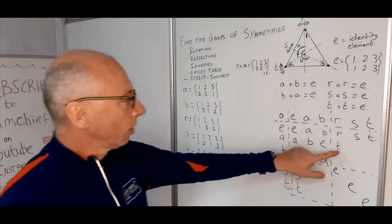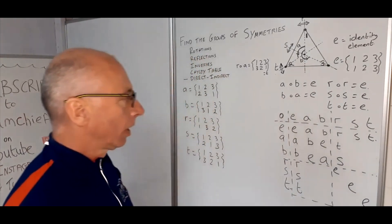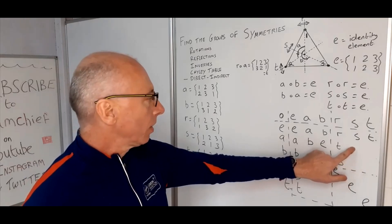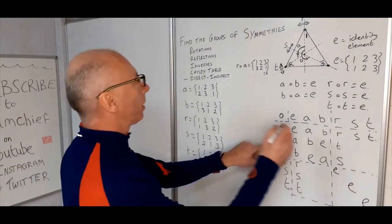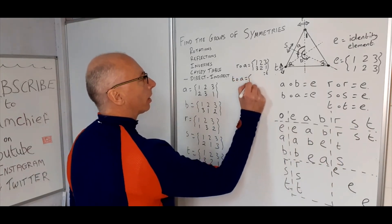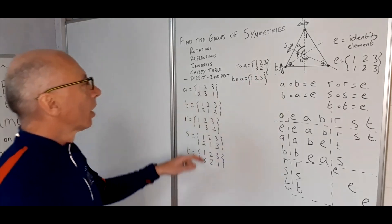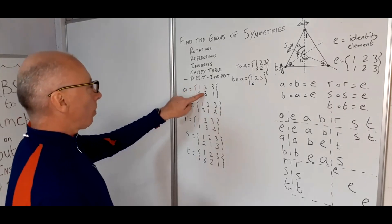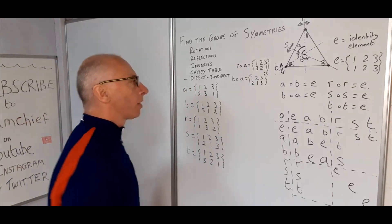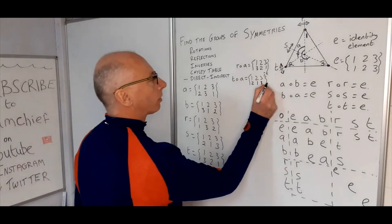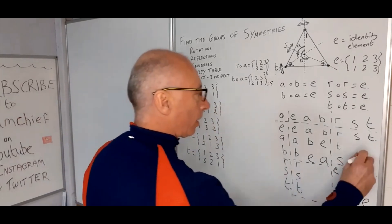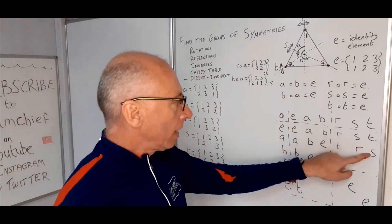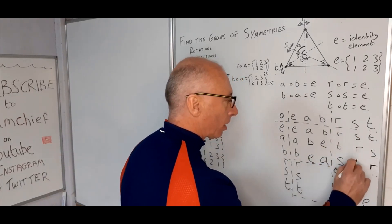Now that we know R composite A is T, we can deduce the only missing entry in that row is S. Next, let's find A composite T: acting on A first, one goes to two, then via T two stays at two; two goes to three then three goes to one; leaving three — giving two, one, three, which is S. So T composite A gives S, meaning that cell is S, and we can fill in R for the remaining entry.